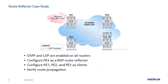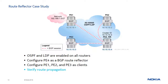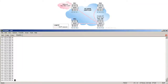Next we will move to our lab to complete this case study. OSPF and LDP are enabled within Autonomous System 65000. We will enable BGP and configure PE4 as a route reflector with PE1, PE2, and PE3 as its clients, then verify route propagation throughout the topology. The first step is to configure PE4 as a BGP route reflector. We must configure a cluster and specify the cluster ID, which is 10.10.10.4 in this example, then add the client peers PE1, PE2, and PE3 by configuring their addresses in the cluster.